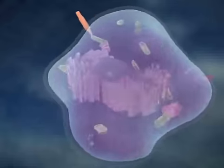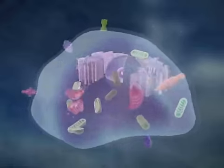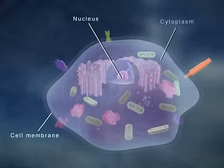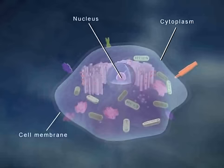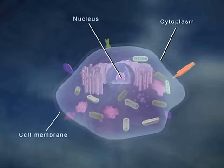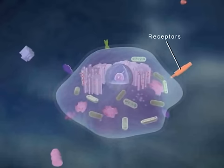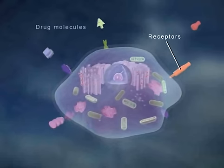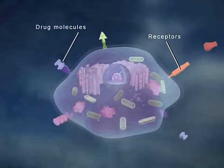Most drugs act on a cellular level by chemically binding to receptors on cell membranes or inside cells. The cell membrane contains receptors for many kinds of substances, such as hormones and neurotransmitters. Some receptors also interact with drug molecules. As a drug molecule binds to a receptor, reactions are initiated that stimulate or inhibit regular cellular functions.